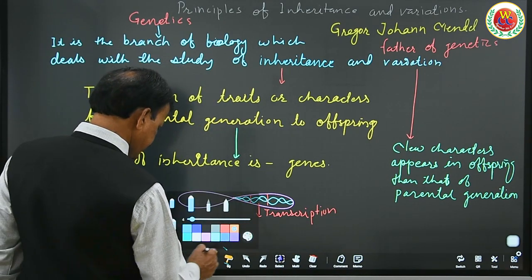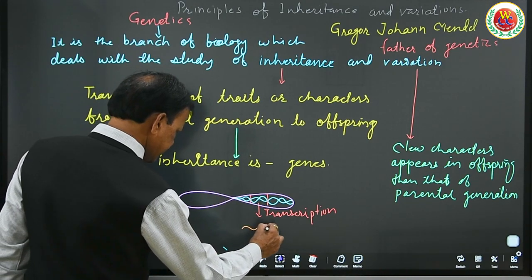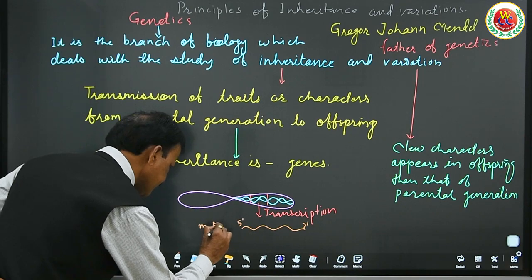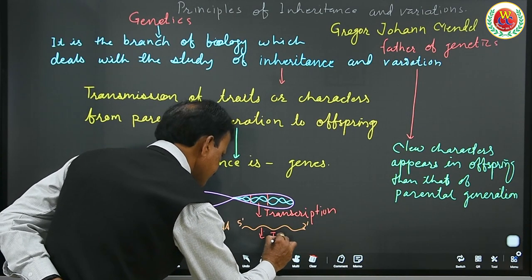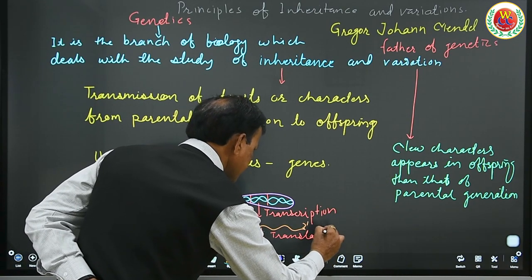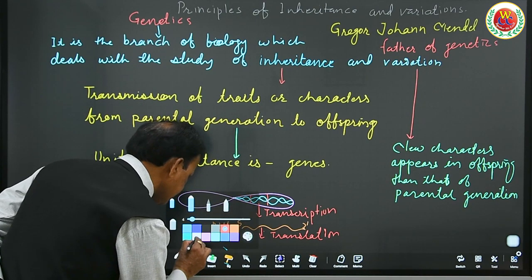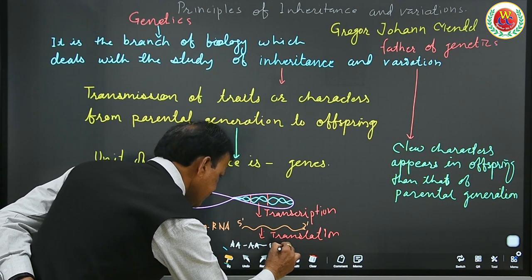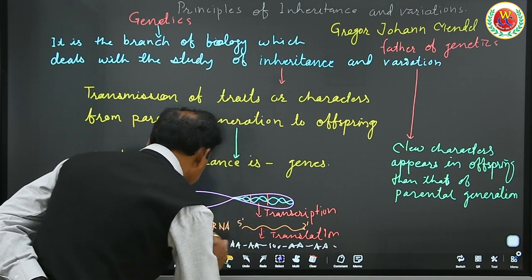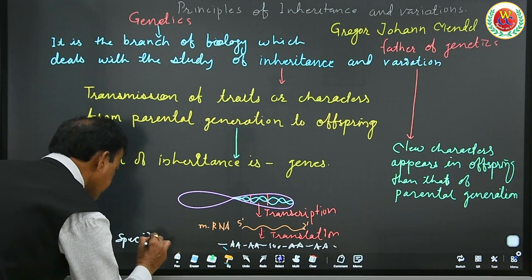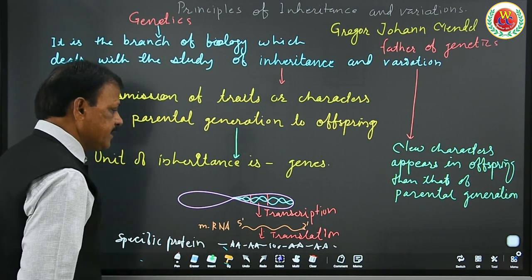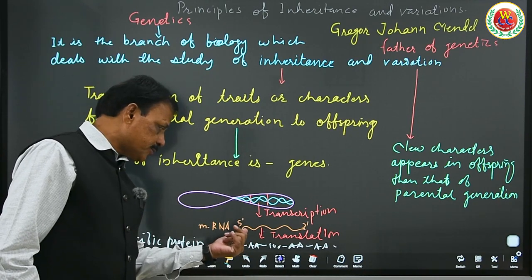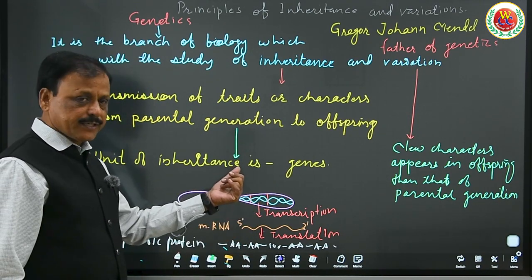The messenger RNA in 5'-3' direction codes for a specific protein. The messenger RNA undergoes translation and produces a specific protein having thousands of amino acids in a chain — a polypeptide chain of amino acids — which is a specific protein. This specific protein controls a specific character, either structure or function. Thus, the protein produced controls the character. So trait is controlled by protein, and protein is produced by that gene present on the chromosome. Gene is the unit of inheritance.